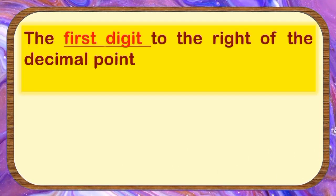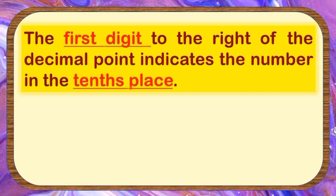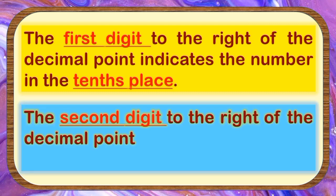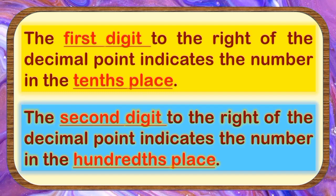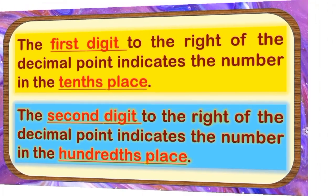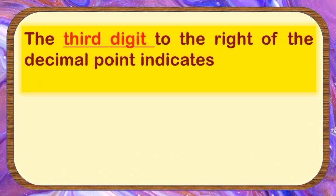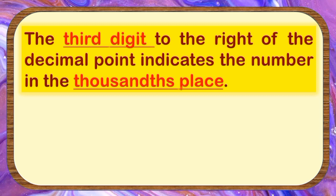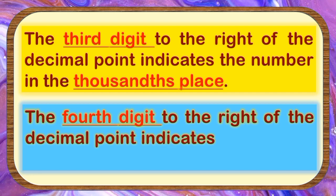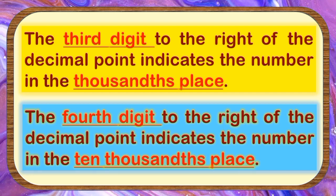Remember this, children. The first digit to the right of the decimal point indicates the number in the tenths place. The second digit to the right of the decimal point indicates the number in the hundredths place. The third digit to the right indicates the number in the thousandths place. While the fourth digit to the right of the decimal point indicates the number in the ten-thousandths place.